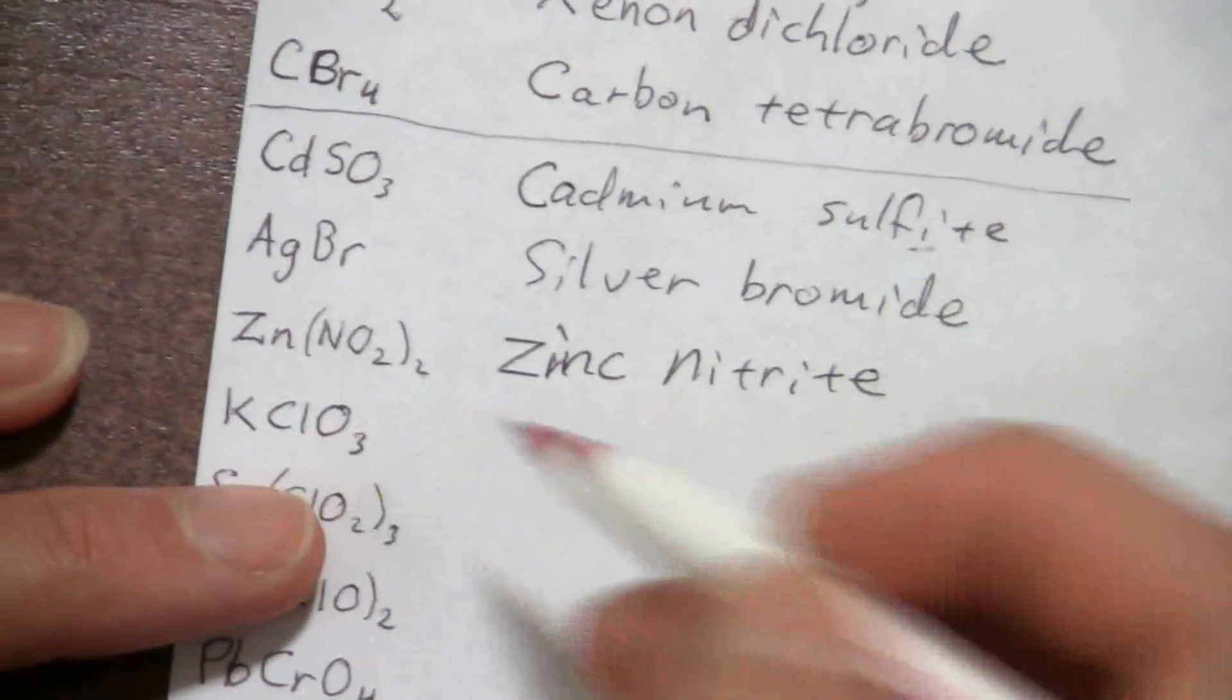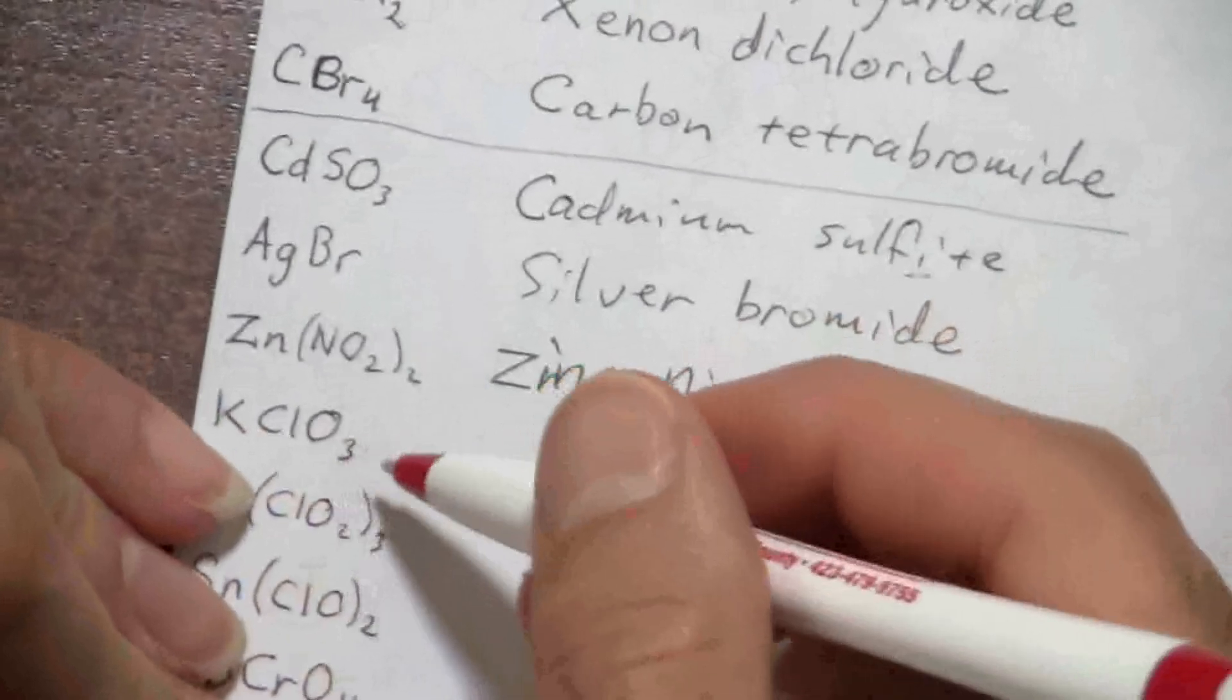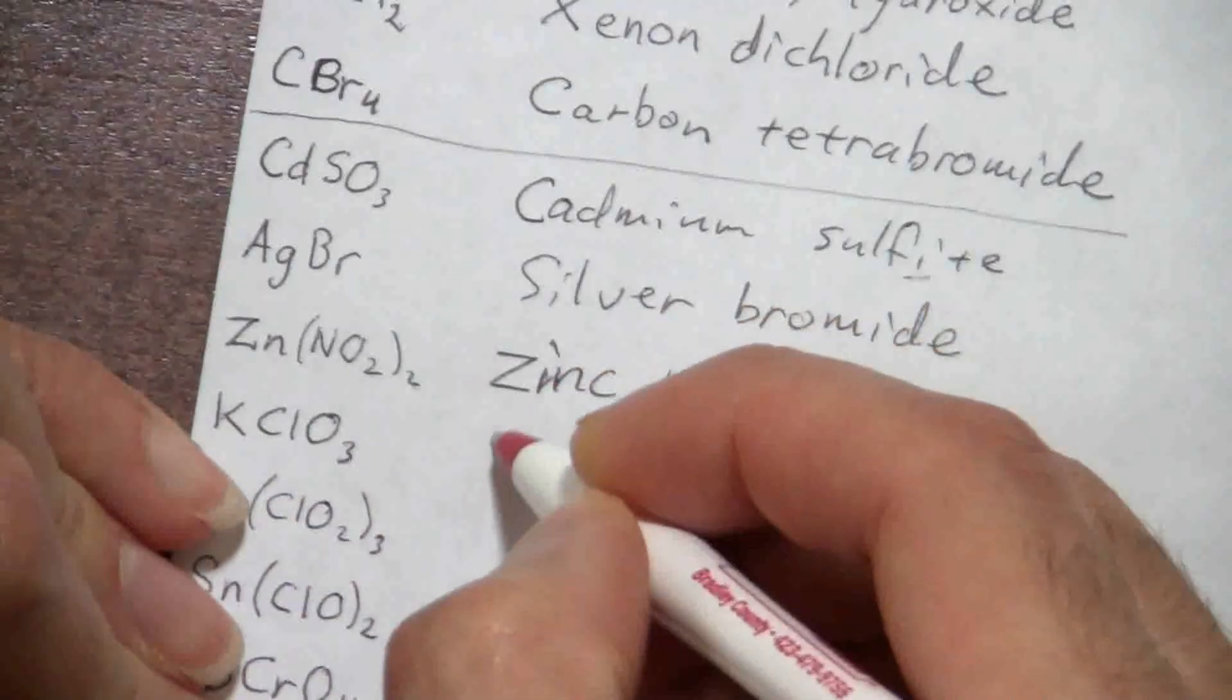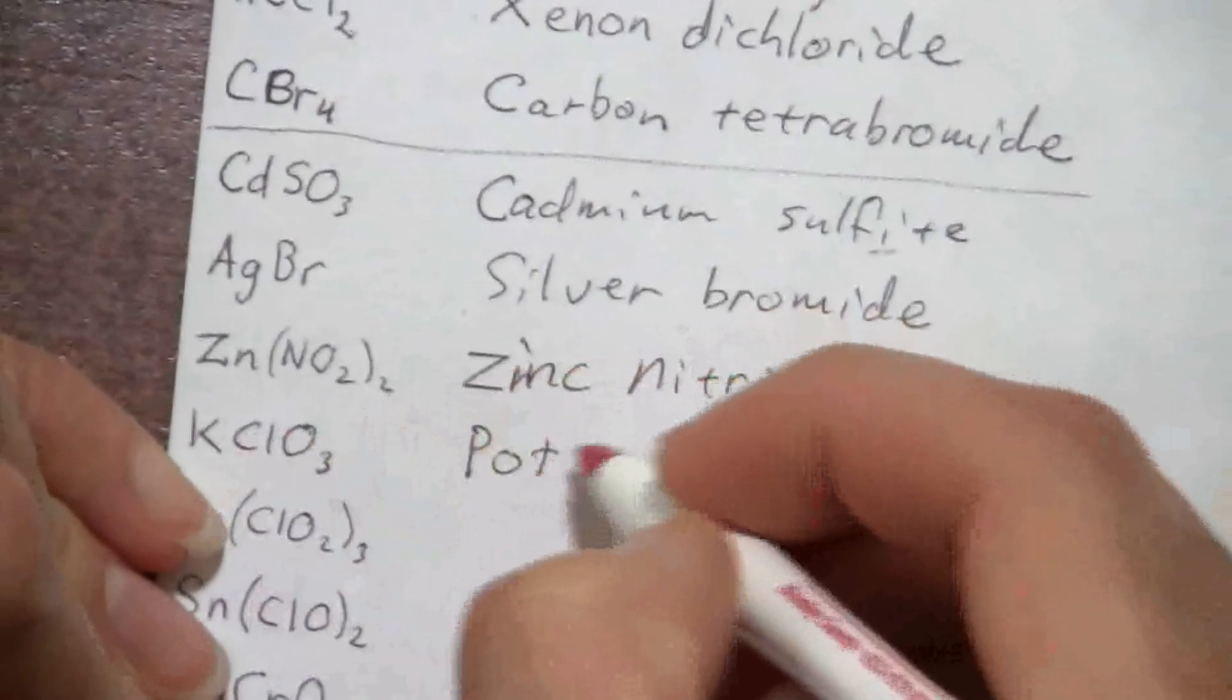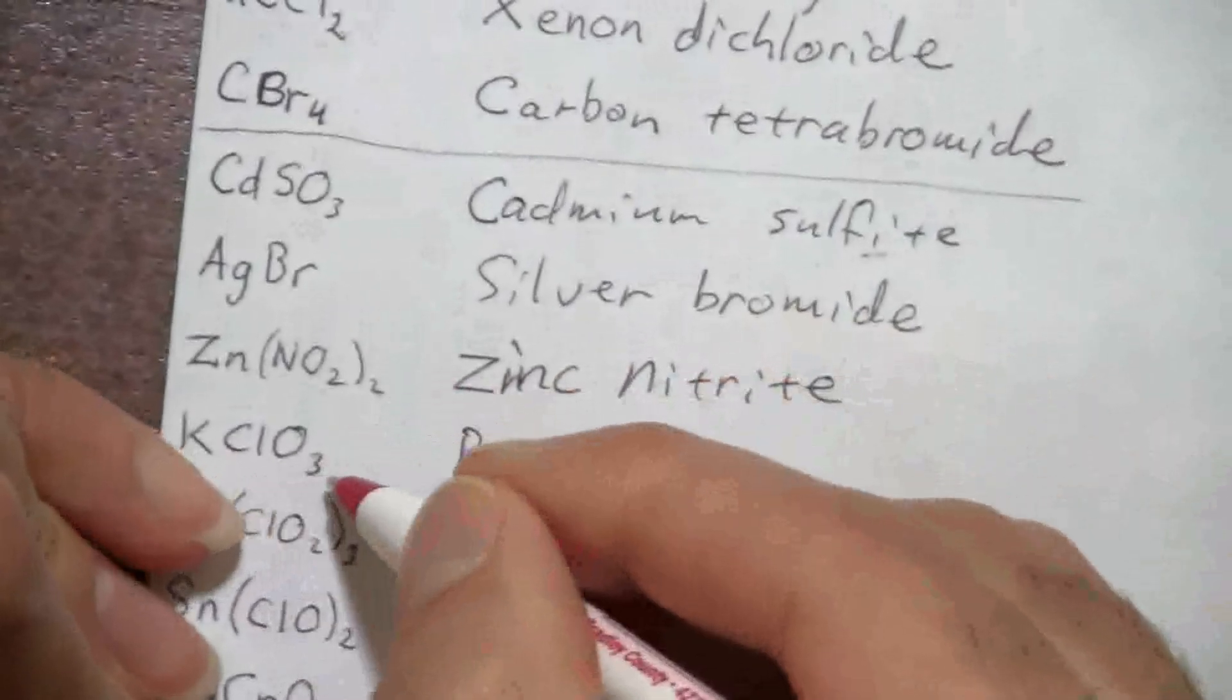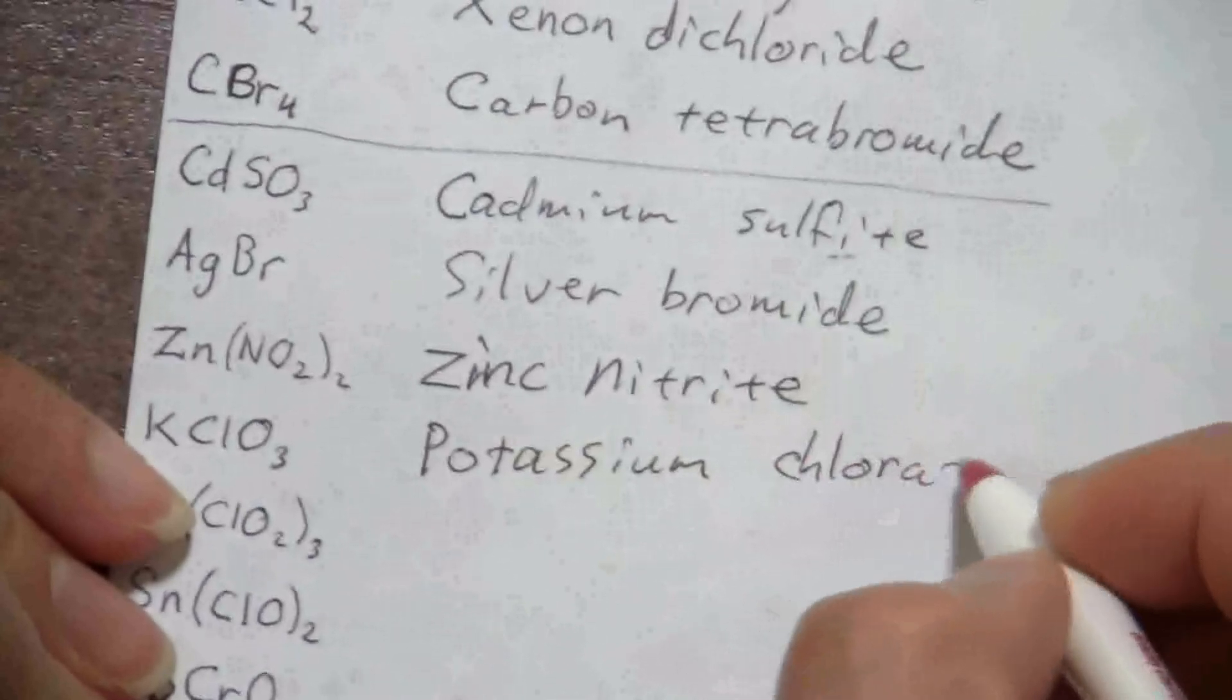Alright, so here's another polyatomic ion that is somewhat less frequently encountered but still an important ion. Here we have potassium, and this is the chlorate ion.